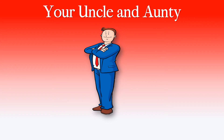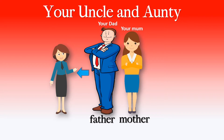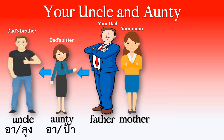Who's this? It's your father, your dad. Who's this? It's your mother, your mum. So here is your dad and your mum. Does your father have a sister? She is your auntie. Does your dad have a brother? He is your uncle. So this is your dad's sister — she is your auntie. And this is your dad's brother — he is your uncle.